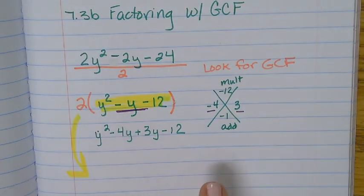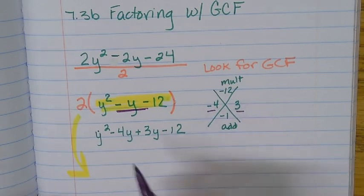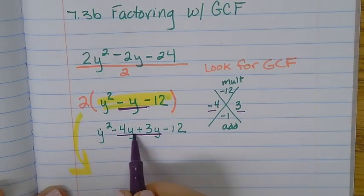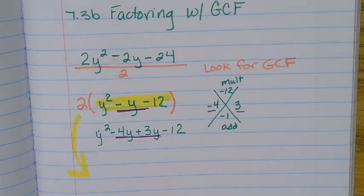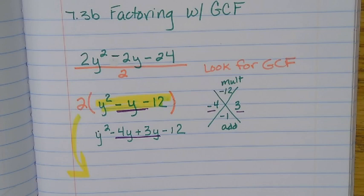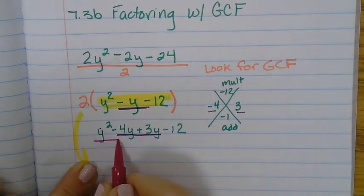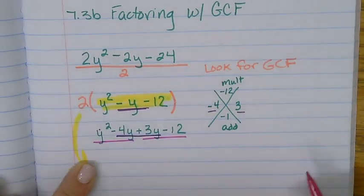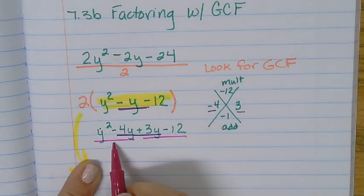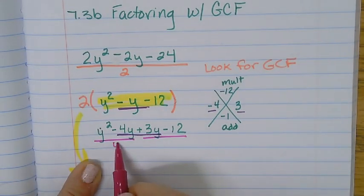So we take those two numbers and we replace that negative 1y with those numbers. I just took those two numbers and we replaced them right here. Now what? Group them. So you have four terms. When you have four terms, you're ready to group. So first two, last two. First two are divisible by y.